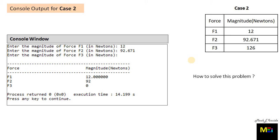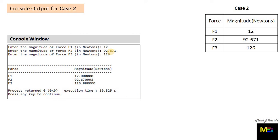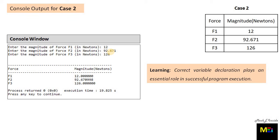The solution is to declare every variable as float type, and remember to make the associated changes throughout the program after changing the declaration type. When the problematic inputs are entered again, we now get a correct output. From this exercise we learn that correct variable declaration plays an essential role in successful program execution. When declaring variables, always keep in mind the nature of the inputs they will receive. Since force magnitude may be rational or integer, it is always best to choose float type, as it handles both cases.